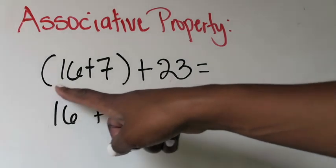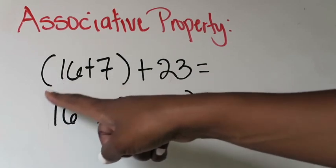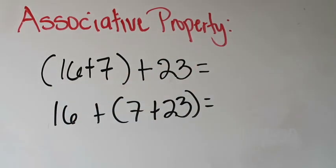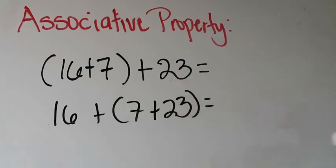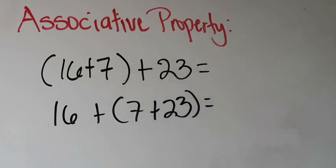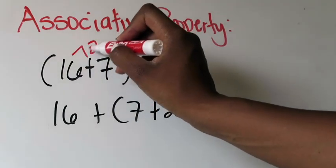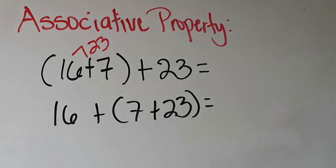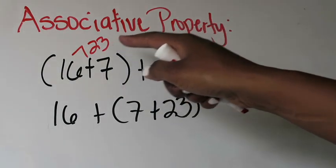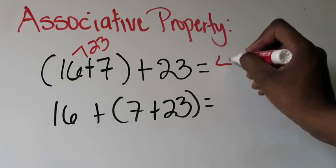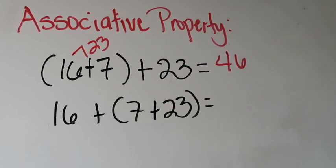Secondly, you should notice these little things here. These are called parentheses, and the parentheses are used to show how you are choosing to group your addends using the associative property. So let's take a look here. If I add in parentheses first, because I'm saying that's what I want grouped together, 16 plus seven, I know that I'm going to get 23. 16 plus seven is 23. And then I would take 23 plus 23, and that would give me a sum of 46.